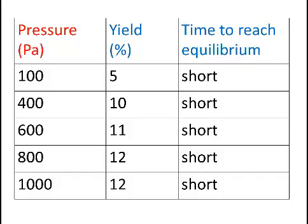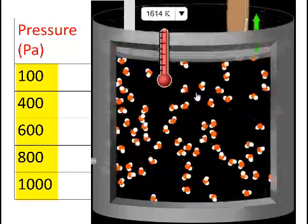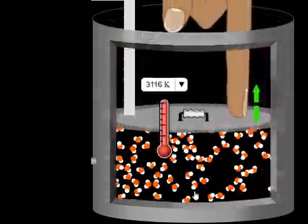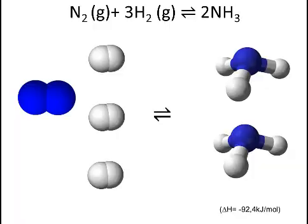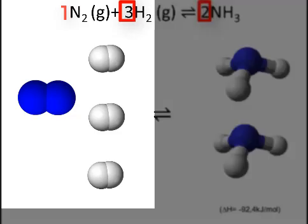What is the effect that we are bringing about here? We are causing there to be a higher pressure, therefore more crowdedness. Now, if we look at the coefficients in front of each of the chemicals in the balanced equation, we notice that